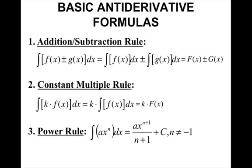The power rule — this one is very important and you will use it a lot. If you are taking the integral of x to the n, the antiderivative is found by adding 1 to the exponent and dividing by the new exponent, plus C, where n cannot equal negative 1.